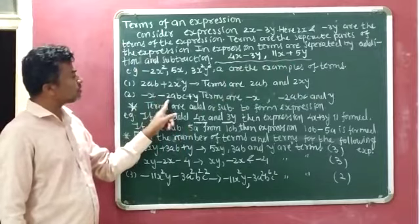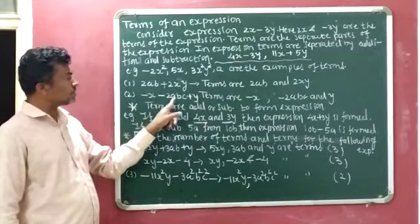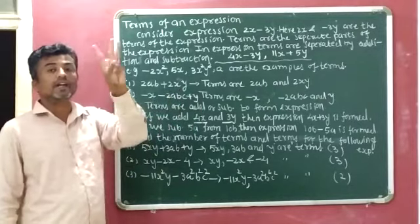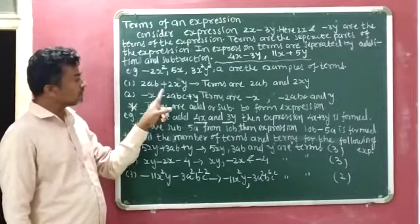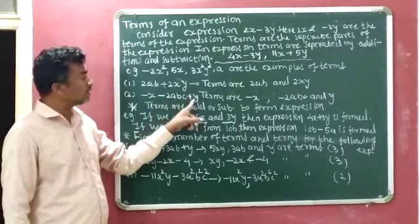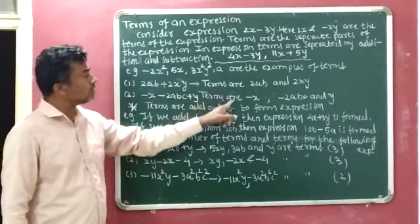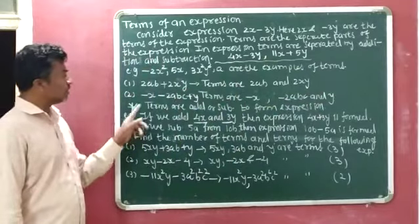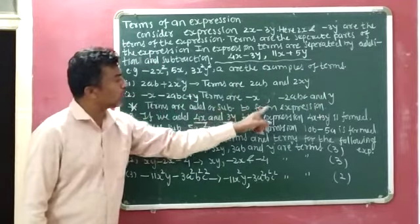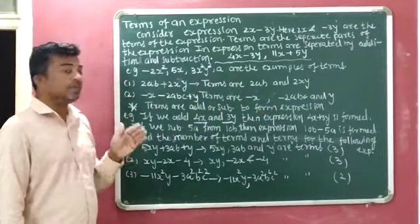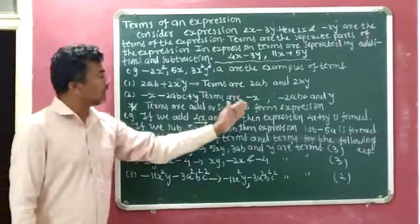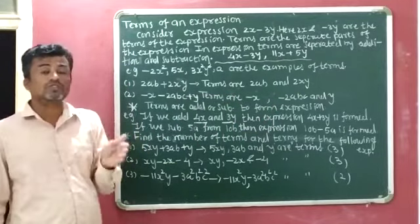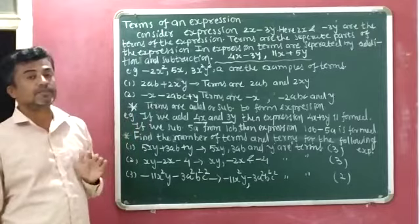Second example: minus x minus 2ab plus y. In this expression, there are three terms. The first is minus x, the second is minus 2ab, and the third is y. Next point: terms are added or subtracted to form an expression. If we add or subtract terms, then an algebraic expression is formed.